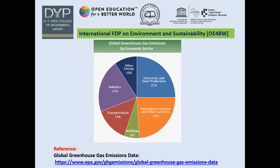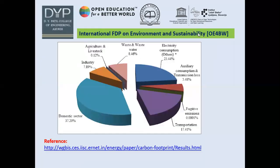But first of all, we are starting from our own home. Similarly, another reference slide also confirms that electricity consumption alone contributes 23.44% of total greenhouse gases emitted. Hence, we have to work on this area to reduce electricity consumption so that carbon emissions can be reduced.